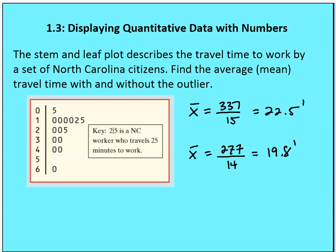If I calculate the mean with the outlier, you can see that my mean value is 22 and a half minutes, whereas without the outlier, it's 19.8 minutes. The apostrophe mark means minutes and a double quotation mark means seconds — that's that abbreviation.